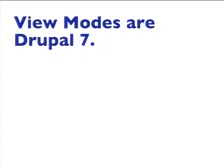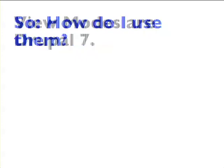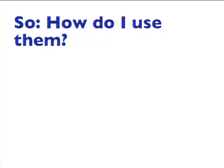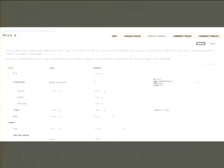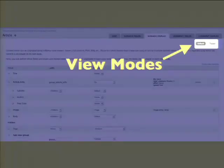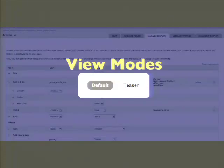View modes are Drupal 7. For those still working primarily in 6, please join us — it is so much better. Drupal 6 was better than 5, and 7 is better than 6. I really encourage you to move whatever mountains you need to get onto 7 — it's a happy place with puppies and rainbows. How do we use view modes? The sneaky thing is, you're already using view modes. This is a managed display page for a node. These little items over here — Default and Teaser — those are view modes. You're probably very familiar with those if you've done Drupal in the past 4 or 5 years.